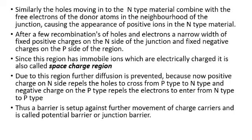The positive charge on the N-type side repulses holes trying to cross from P-type to N-type, and the negative charge on the P-type side repulses electrons trying to enter from N-type to P-type. Thus, a barrier is set up against further movement of charge carriers, and this is called the Potential Barrier or Junction Barrier.